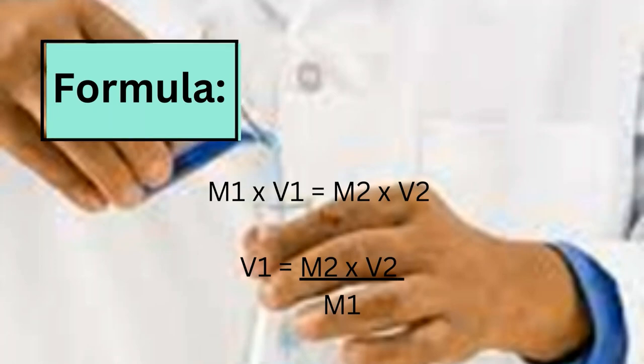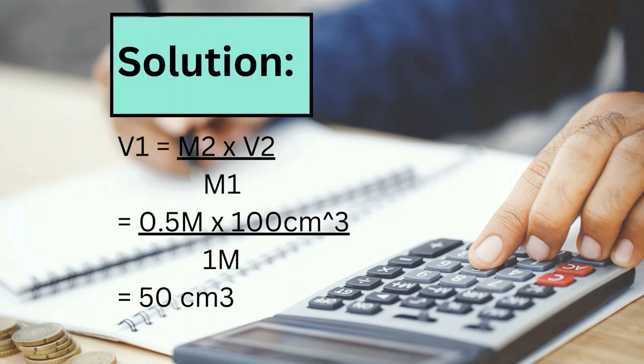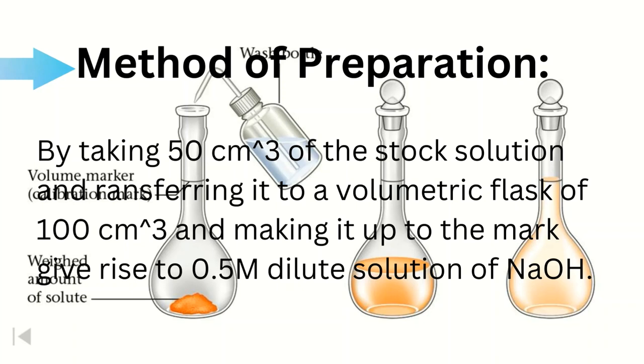Solution: V1 equals M2 into V2 divided by M1. V1 equals 0.5 M into 100 cubic centimeters divided by 1 M. V1 equals 50 cubic centimeters.